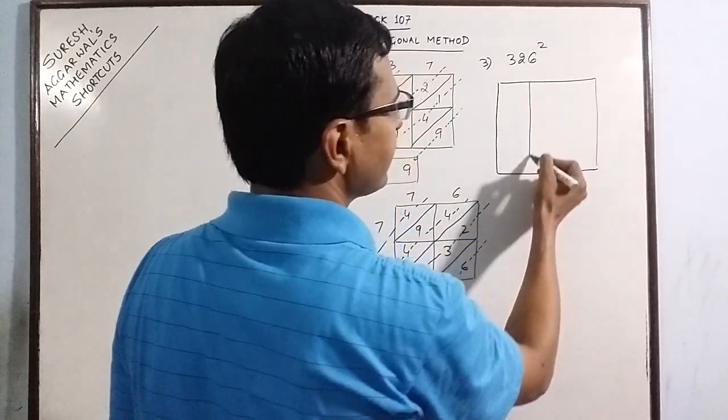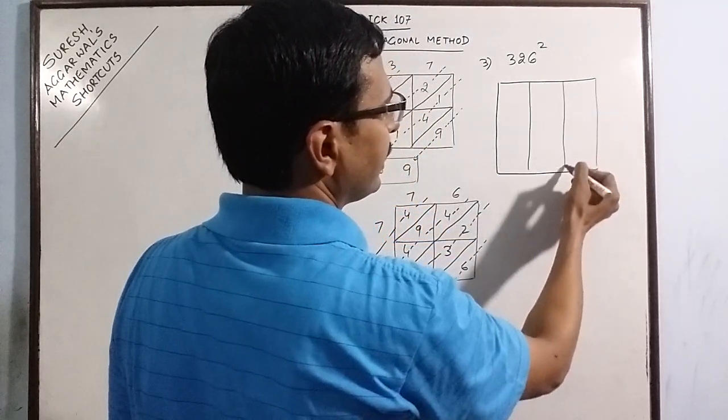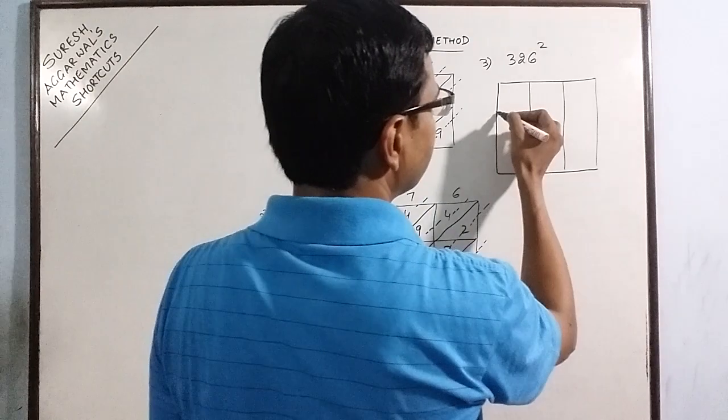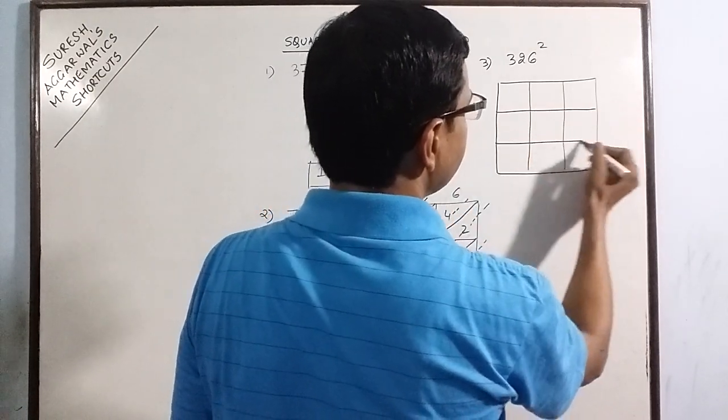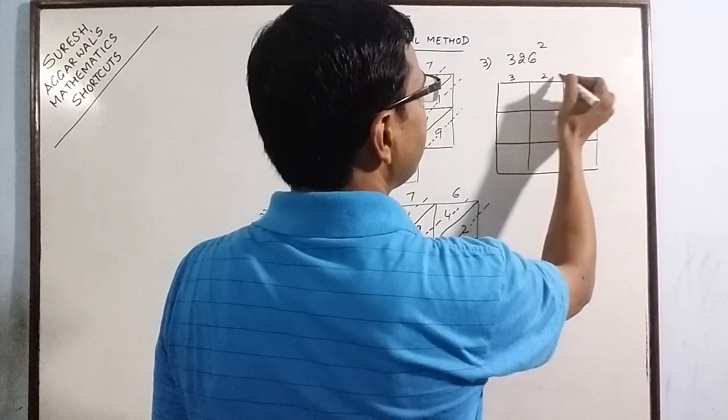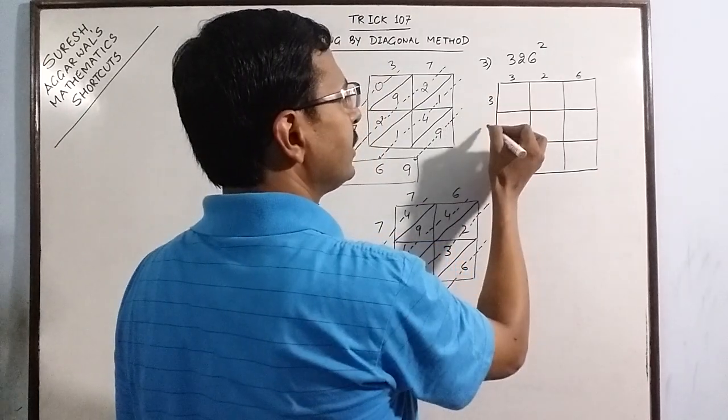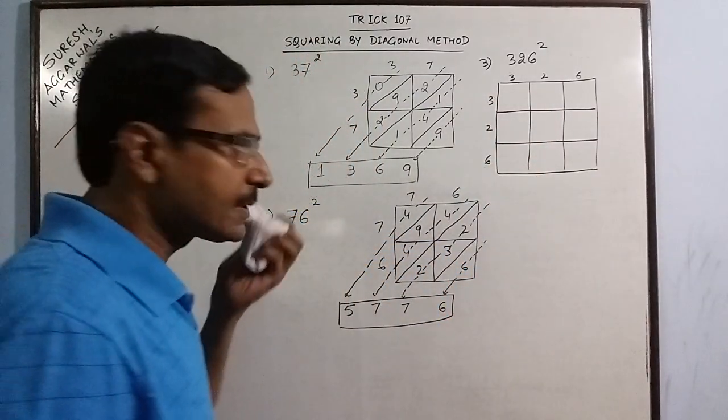So I will have a 3 digit number written on the top and on the left. Like this. So 326. So 326 and 326. Now draw the diagonals.